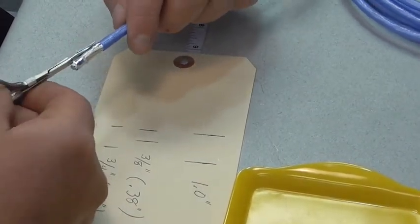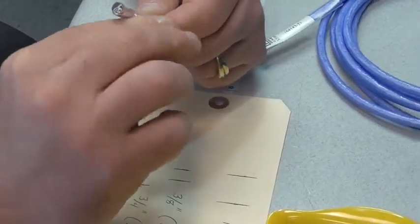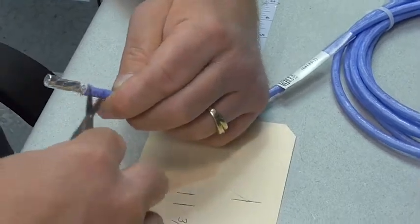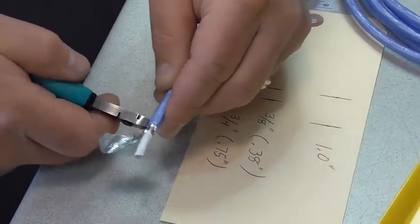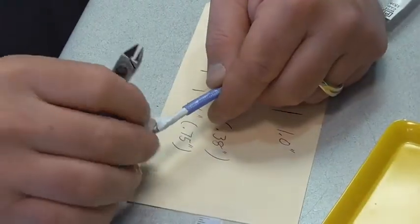Remove the braids, then remove the foil, and then remove the Teflon tape.